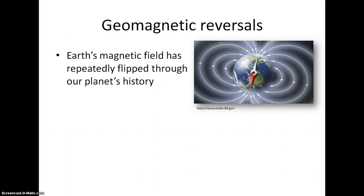This means that a magnetic compass that now points north would point south. The magnetic field reverses on average every 500,000 years, but reversals have happened as frequently as 100,000 years, or as long as 1 million years. The last geomagnetic reversal was approximately 780,000 years ago.